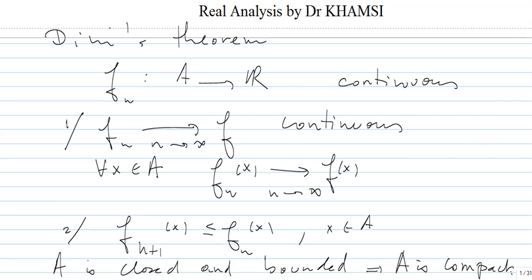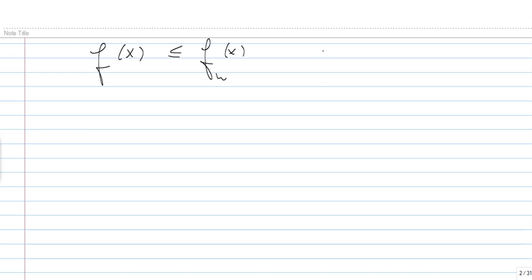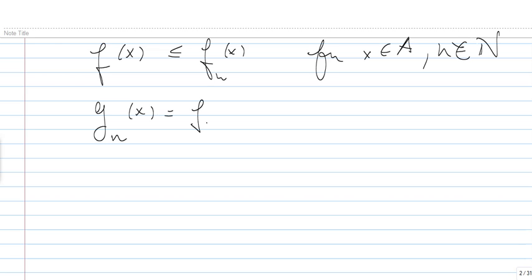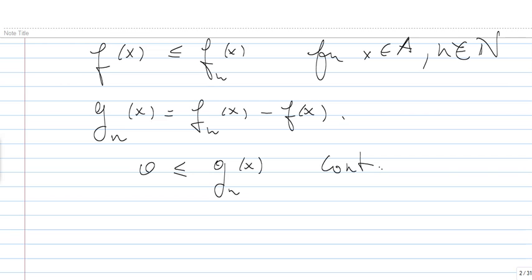Let's bring everything to zero. Since F is continuous, the limit is also important to assume continuous. Because the sequence is decreasing, we know F(x) is smaller than Fn(x) for every x and every n. Let us introduce the functions Gn, defined as Gn(x) = Fn(x) − F(x). In this case the Gn's will all be positive and continuous, with Gn+1 less than Gn, and the Gn's converge to 0 pointwise.